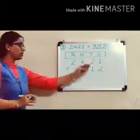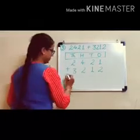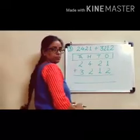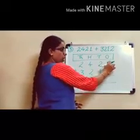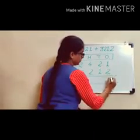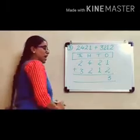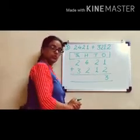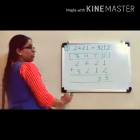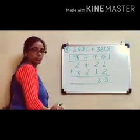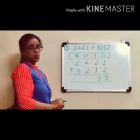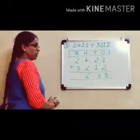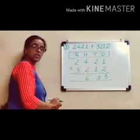All numbers are arranged in the columns. We will add them. First we add the 1s column: 1 plus 2 is equal to 3. Then we add the 10s column: 2 plus 1 is equal to 3. Next we add the 100s column: 4 plus 2 is equal to 6. And finally we add the 1,000s column: 2 plus 3 is equal to 5.